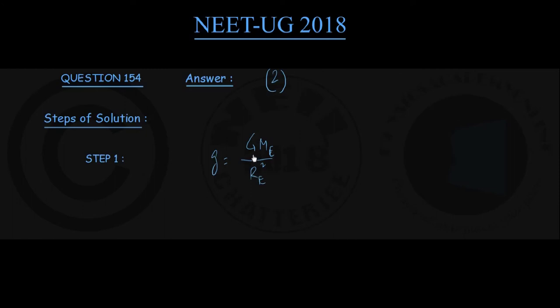In this formula, nowhere the mass of sun is coming. So if you make the mass of sun 10 times smaller, there is no effect of that on the free fall acceleration on the earth surface.